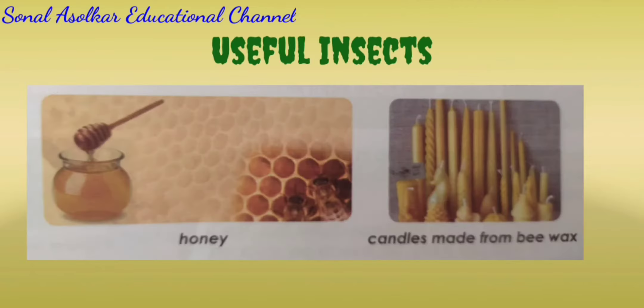Some of the insects that we see in our surroundings are useful to us. Useful insects: Honeybees store honey in their hives. We take this honey and use it in our food and in the preparation of medicines. Beehives are made up of beeswax. We use this wax in medicines. Beeswax is also used to make candles.